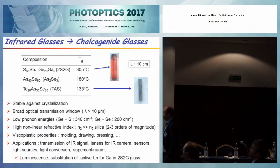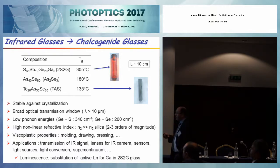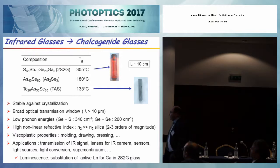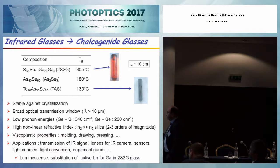What makes them very special is that they have a broad optical transmission window, up to 10 microns and above. This is of course related to the low phonon energies of these materials. Typically, the fundamental vibration modes — for instance, for a germanium sulfide glass — are down to 340 wavenumbers, and if we substitute selenium for sulfur, it goes down to 200 wavenumbers.